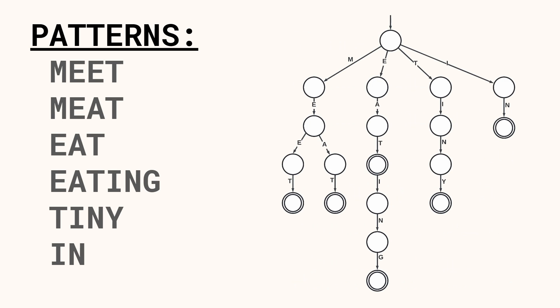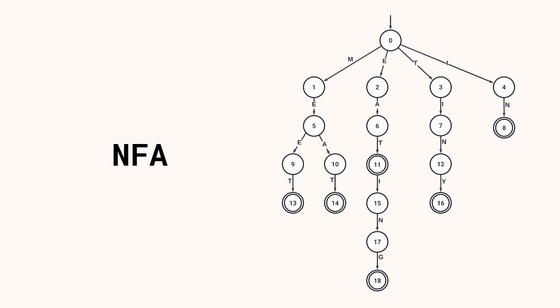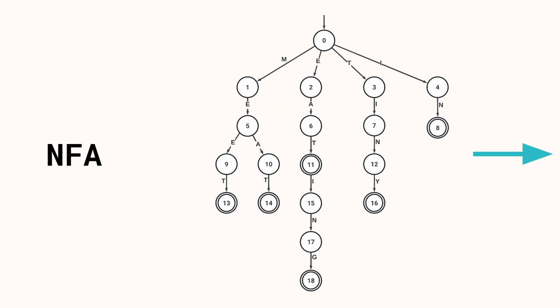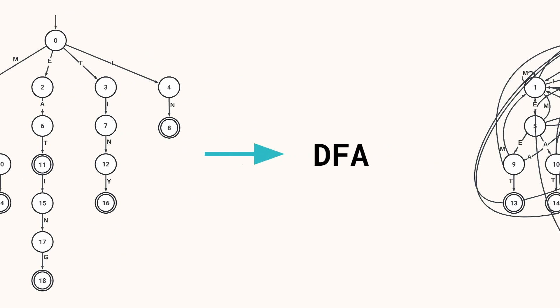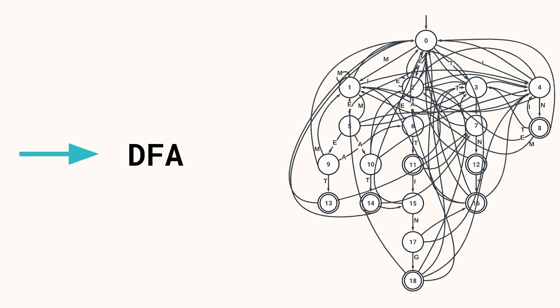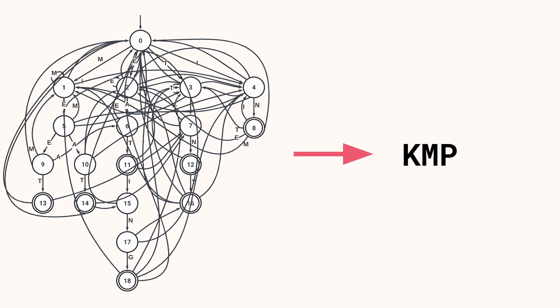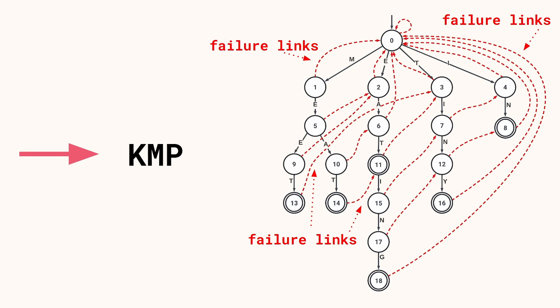When we have a set of strings we can put them together in a trie. The trie really is a non-deterministic finite automaton, and as we've seen in a previous video we should be able to turn it into a deterministic finite automaton capable of finding these patterns in a text. But building a DFA requires a lot of transitions. The KMP algorithm taught us we can replace them with a different type of transitions called failure links.